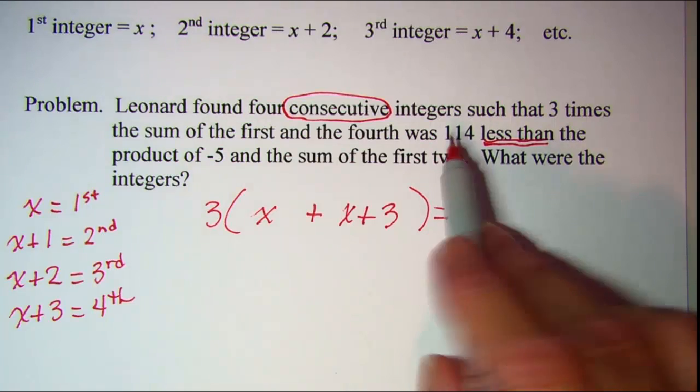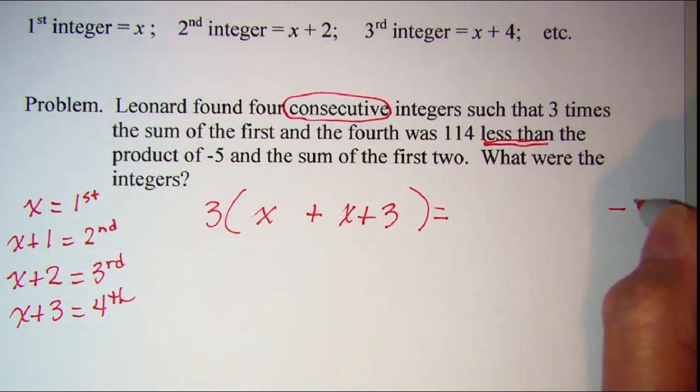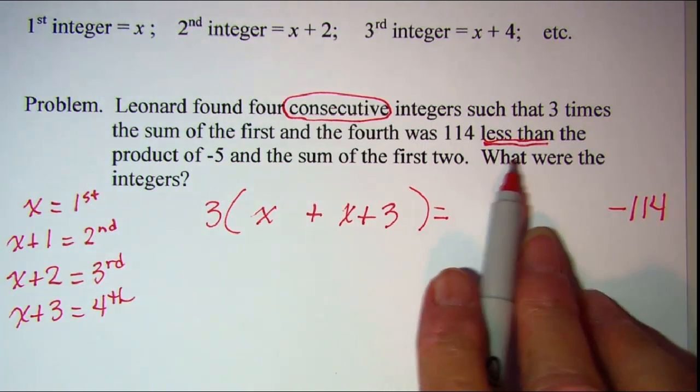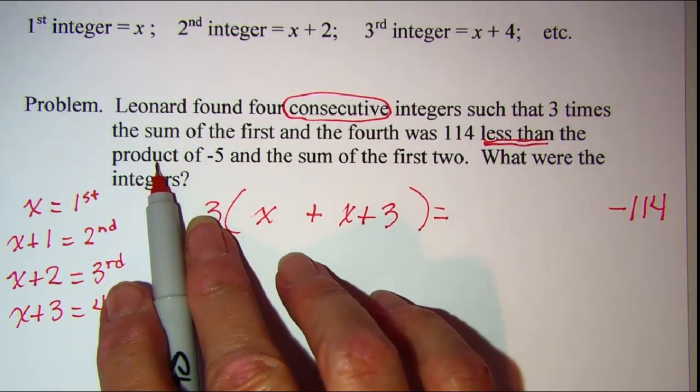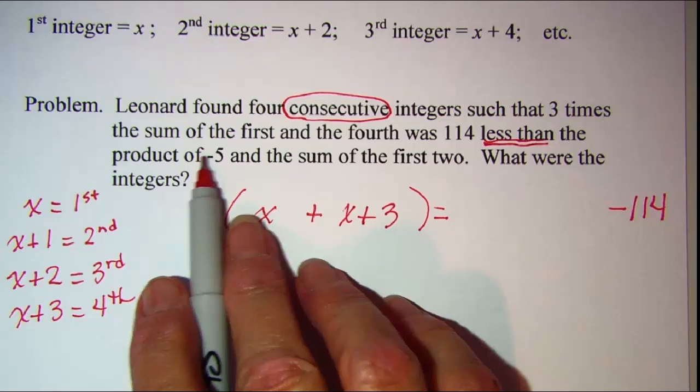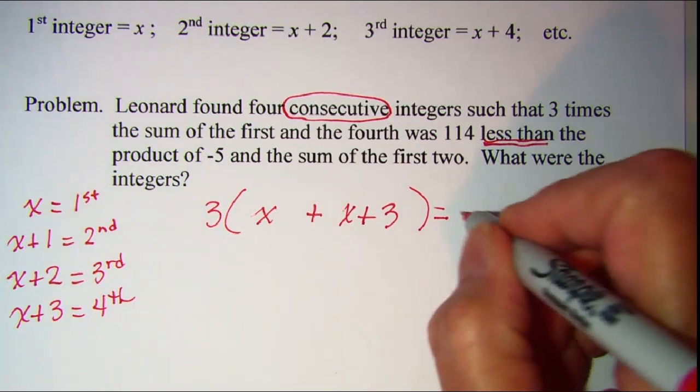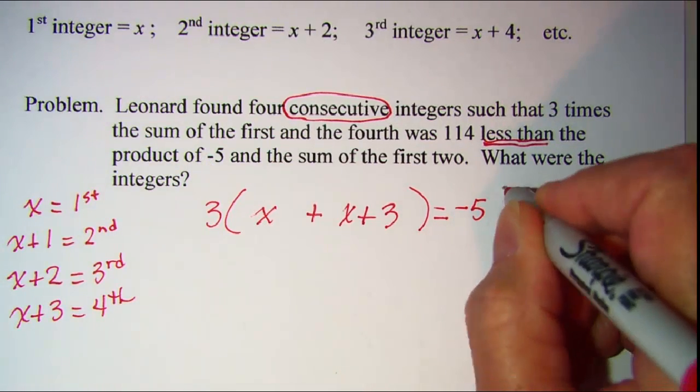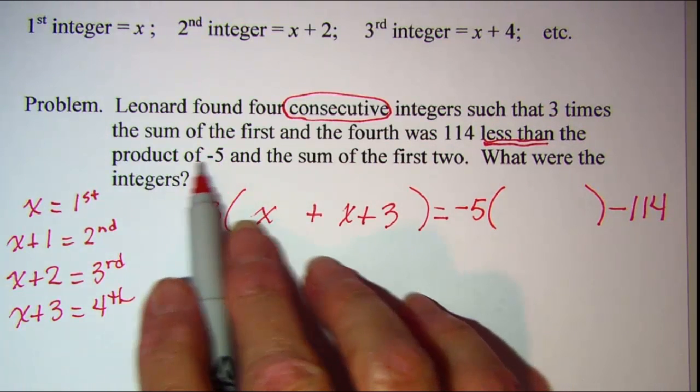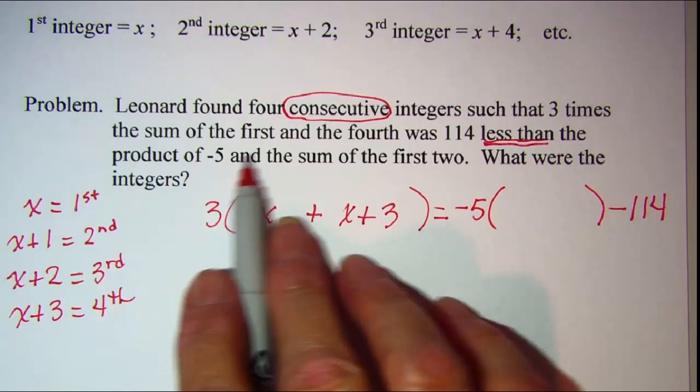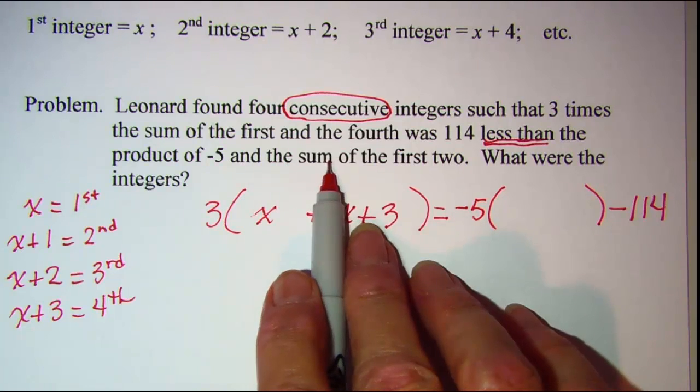So I'm subtracting this 114 from something because it's 114 less than the product of, now product means multiplication, so I'm going to multiply negative 5 times something, product of negative 5 and the sum of the first two.